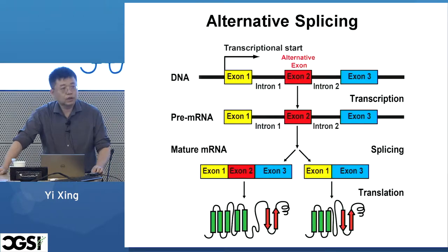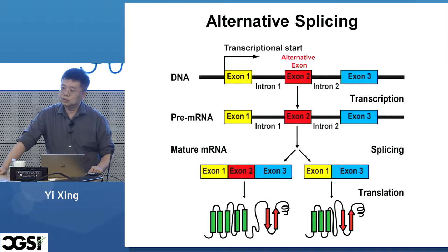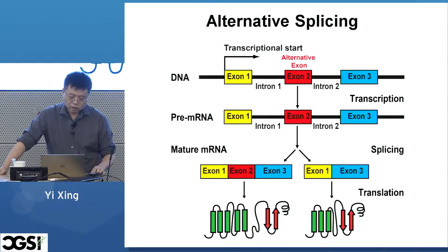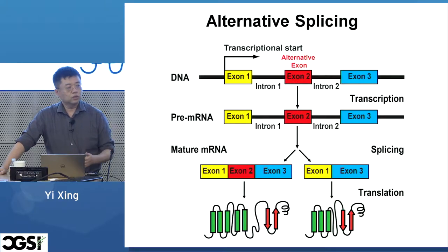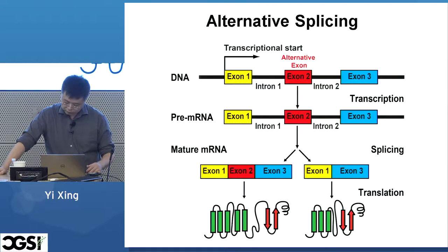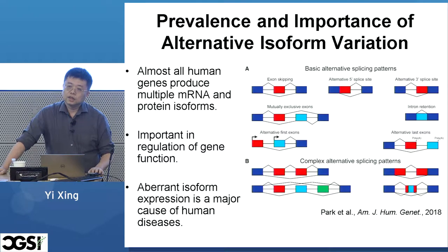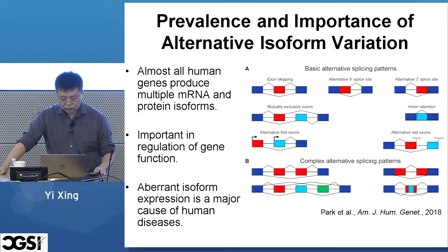One of the major interests of the lab is RNA alternative splicing. This is a really important regulatory mechanism that can substantially diversify the mammalian transcriptome and proteome. Here I'm showing a simple cartoon example involving a three-exon gene in which the middle exon is alternatively spliced. By alternatively including or skipping this middle exon, we can generate two distinct mRNA isoforms from a single gene, which could be translated into two different protein isoforms with different biological functions. Almost all multi-exon human genes produce alternative mRNA and protein isoforms.